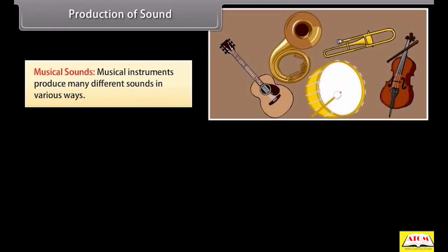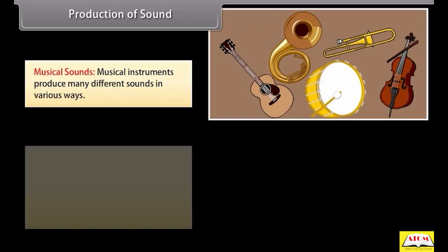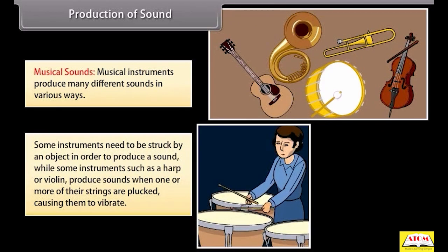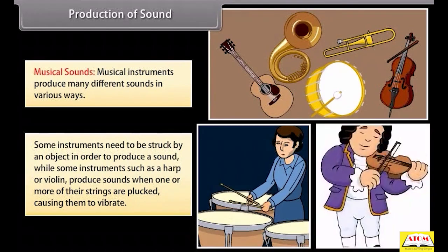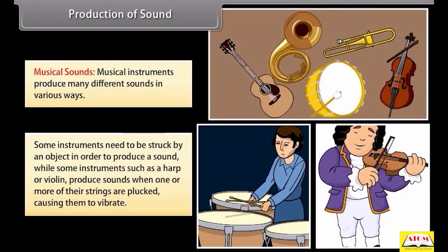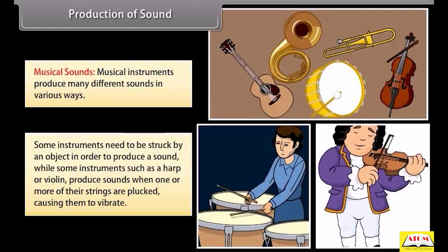Musical sounds. Musical instruments produce many different sounds in various ways. Some instruments need to be struck by an object in order to produce a sound. While some instruments such as a harp or a violin produce sounds when one or more of their strings are plucked, causing them to vibrate.